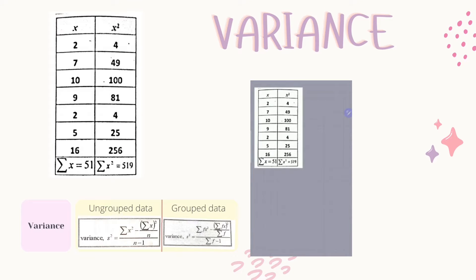So this is the data given. In order to find the variance, we need to determine whether this is grouped data or ungrouped data. As you can see, this is ungrouped data.